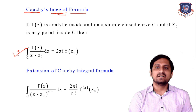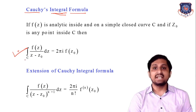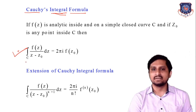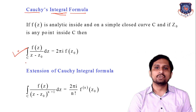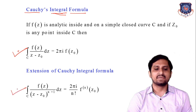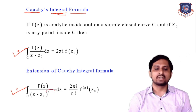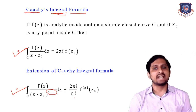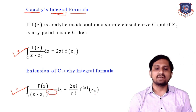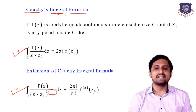This formula we can only use if the degree of (z minus z₀) in the denominator is only 1. But suppose the degree of (z minus z₀) in the denominator is more than 1 — how can you use Cauchy's Integral Formula? For that you have to apply this formula: integration of f(z) upon (z minus z₀)^(n+1) dz equals 2πi upon n factorial times the nth derivative of the function at point z₀.